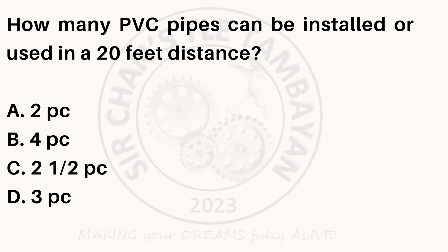How many PVC pipes can be installed or used in a 20-feet distance? A. 2 PC. B. 4 PC. C. 2.5 PC. D. 3 PC.